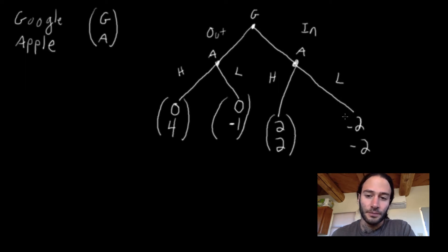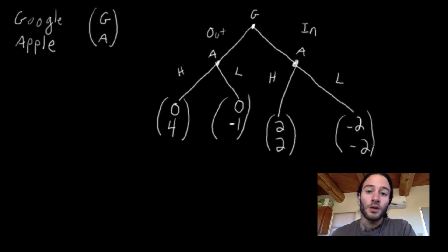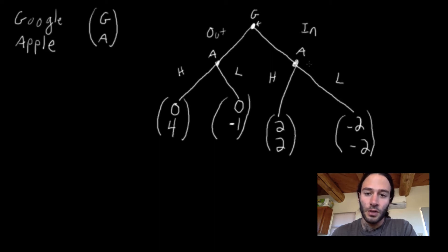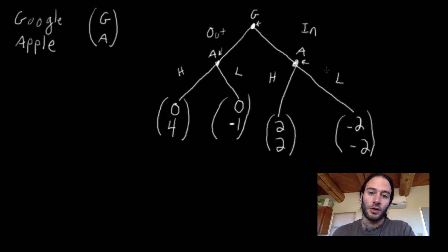Price wars are bad for companies. This fully represents the game. The nodes here are called decision nodes — this is Google's decision node, and these two are Apple's decision nodes.